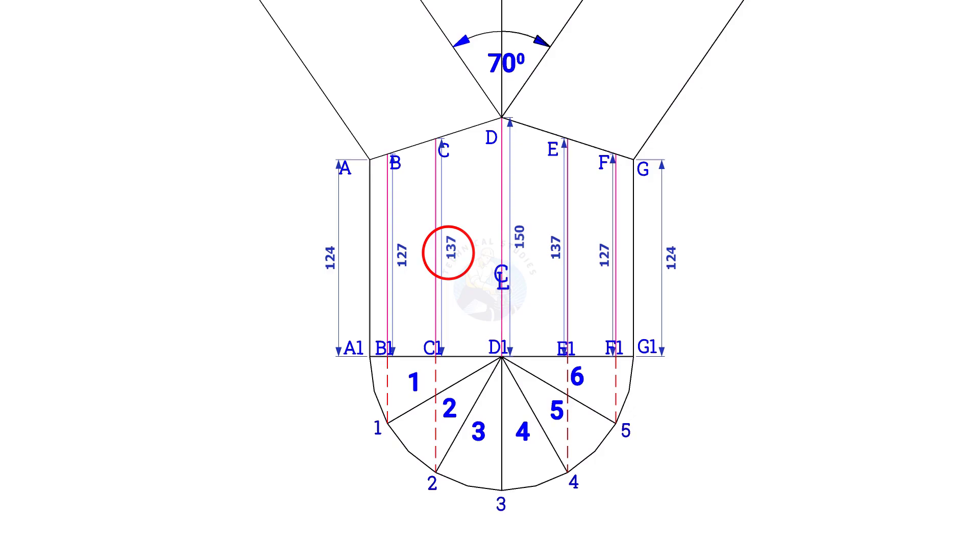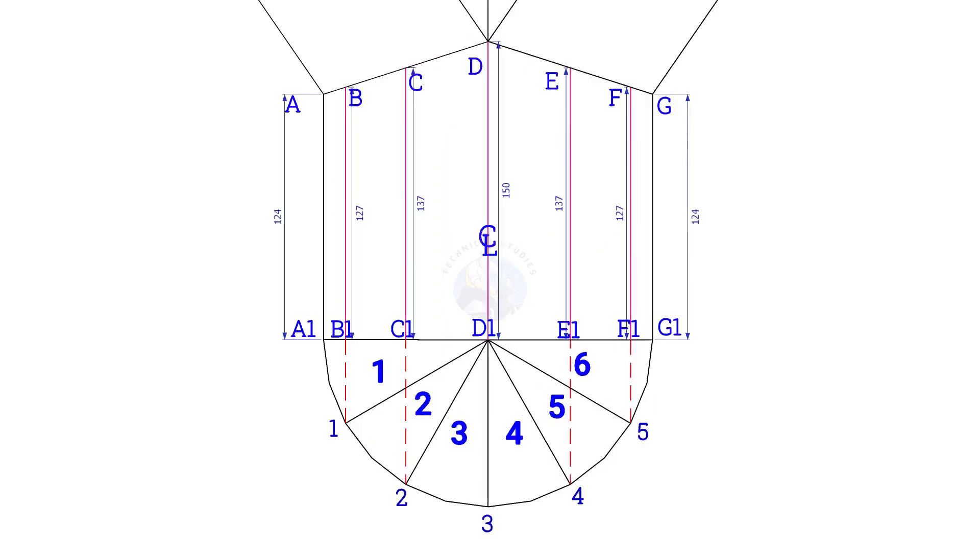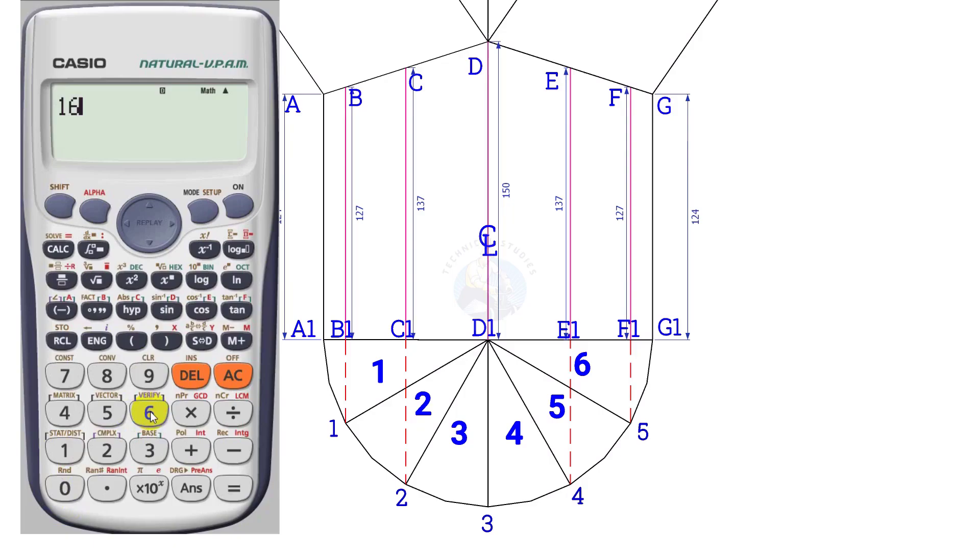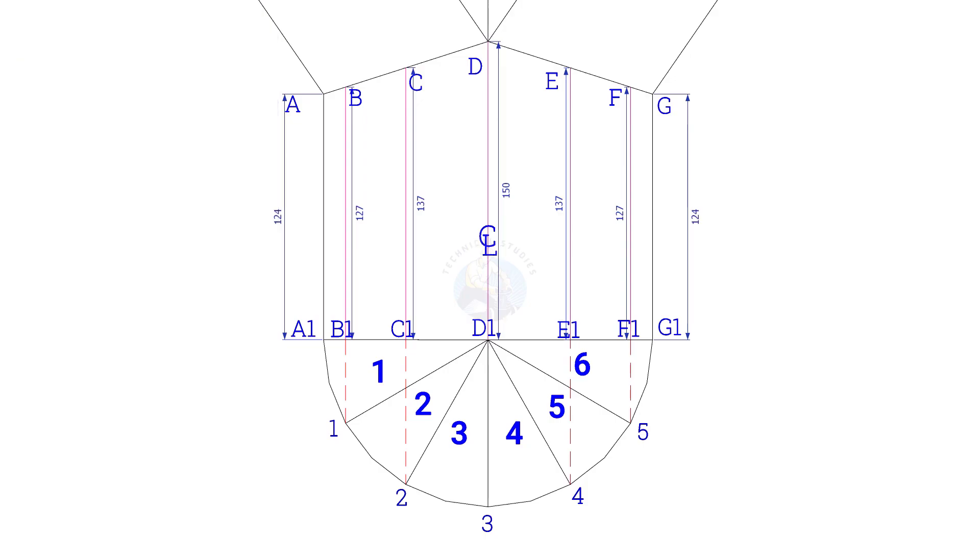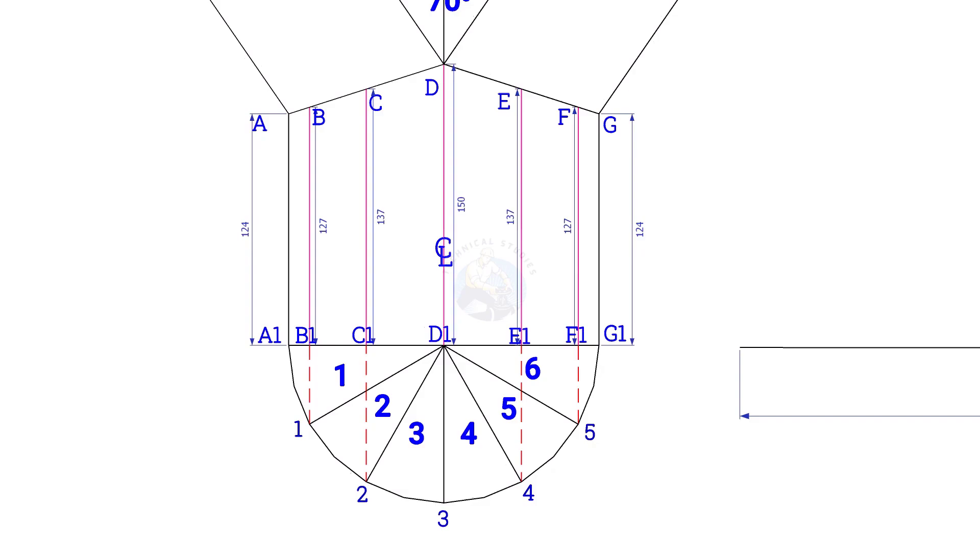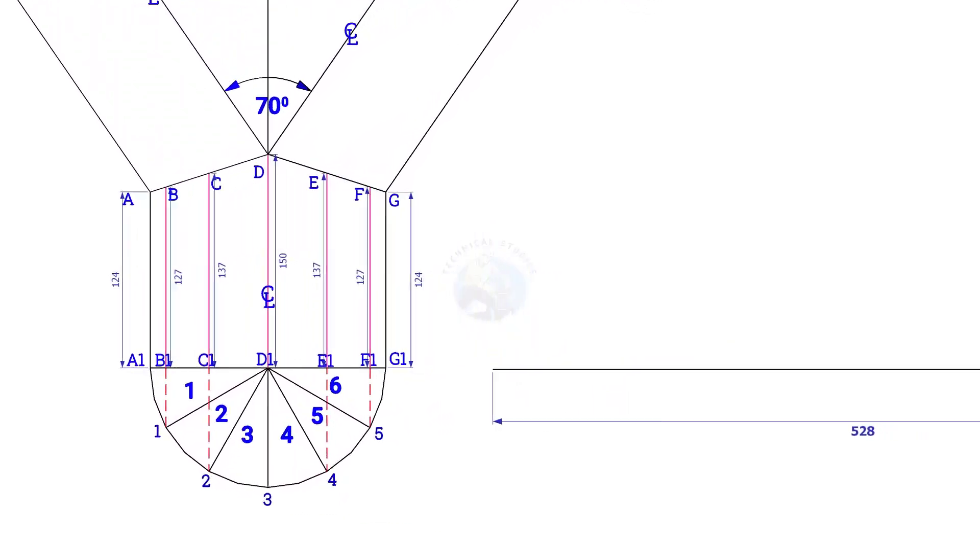Now, calculate the circumference of the pipe. Multiply the pipe diameter by 3.14 or pi. Since the diameter of the pipe is 168, multiply it with 3.14. The circumference is nearly 528 mm. Draw a 528 mm long line.